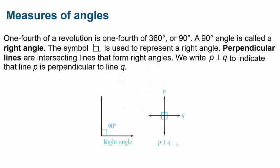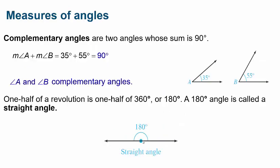One-fourth of a revolution is one-fourth of 360 degrees, which is a 90-degree angle. A 90-degree angle is called a right angle, and this small square symbol is used to represent it. Perpendicular lines are intersecting lines that form right angles. If line P and line Q are perpendicular, they form 90-degree angles, and we write P is perpendicular to Q. When you see that little square inside an angle, that means it's a 90-degree angle.